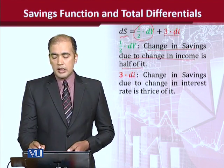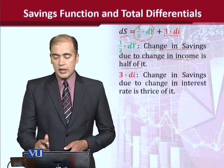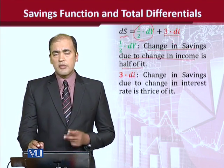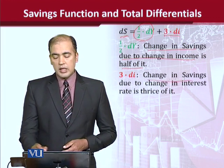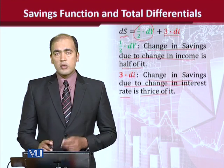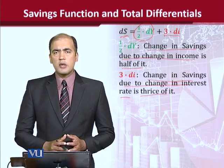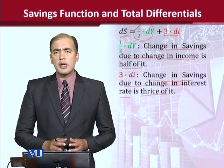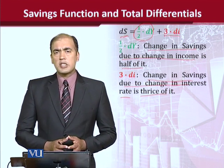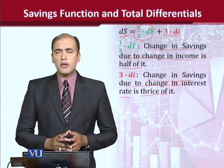The other thing is the impact of I — interest rate — which you can see is being multiplied with three. So we can say that the change in savings due to change in interest rate is three times that of income. In this way, by using total differentials, we can analyze any economic function which has more than one independent variable. Thank you.